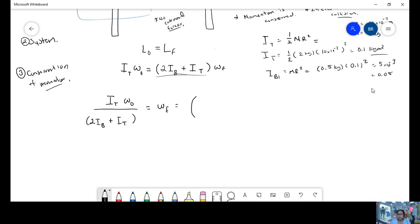So for the inertia, I'm going to have 0.01 over 2 times 0.005 plus 0.01.